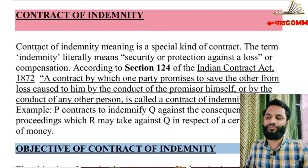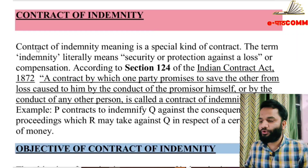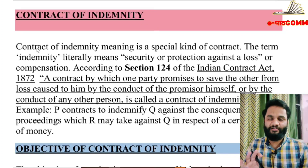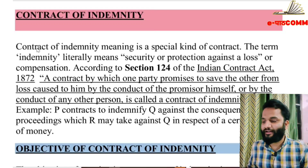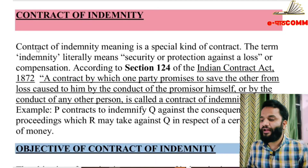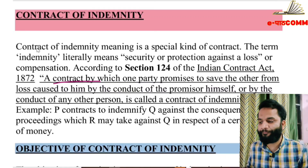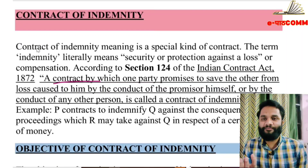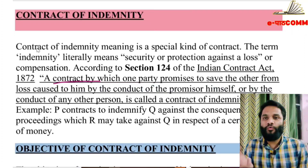Contract of indemnity is defined under Section 124 of the Indian Contract Act. A contract by which one party promises to save the other from loss caused to him by the conduct of the promisor himself or by the conduct of any other person is called a contract of indemnity. One person promises to compensate for losses incurred by the promisee.